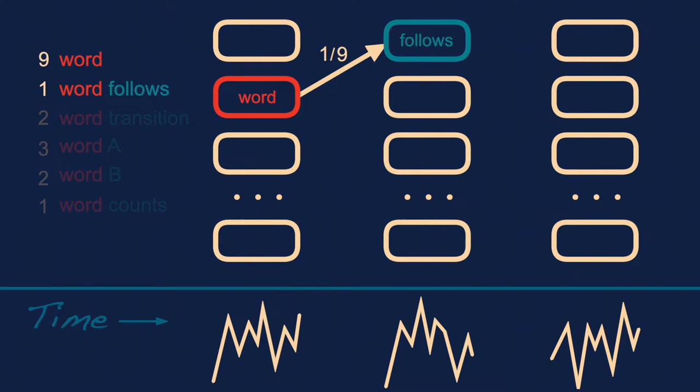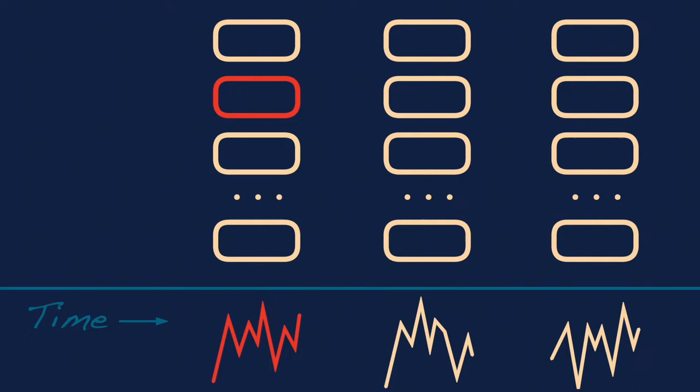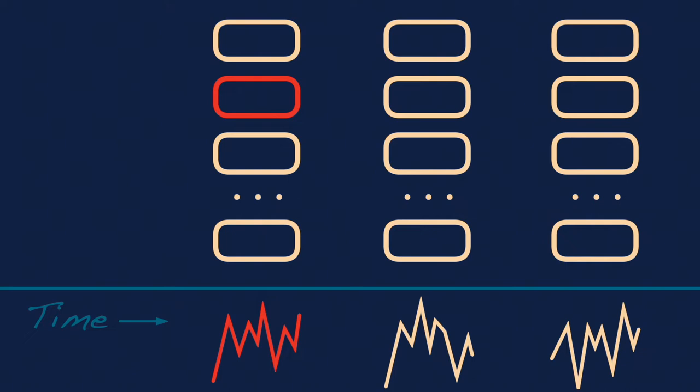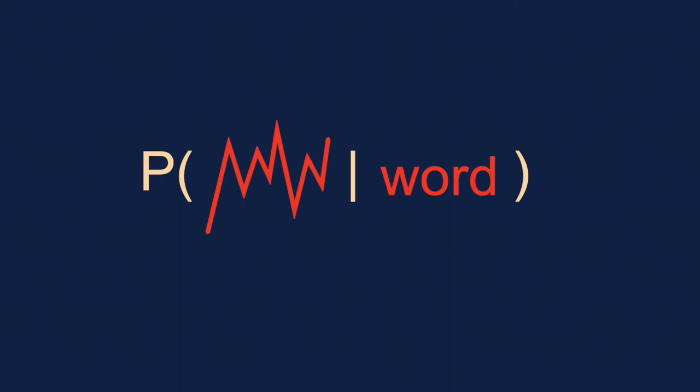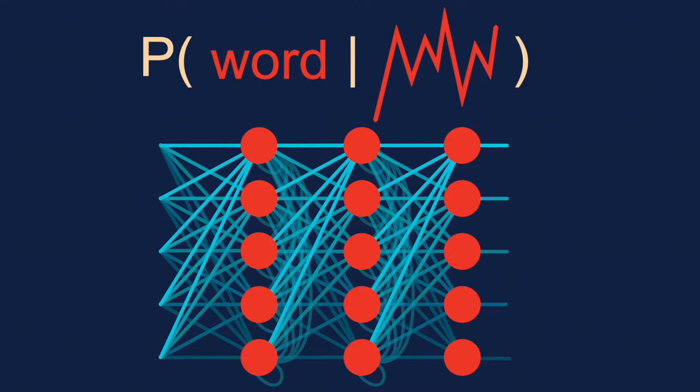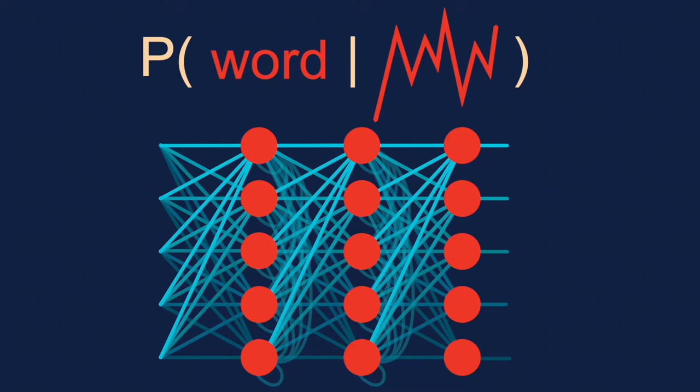It's a bit trickier to estimate the HMM's emission probabilities. What we need is an estimate of the probability that the HMM emits a particular brain signal when in the state corresponding to a particular word. While neither team has probability estimates of a brain signal given a word, they do have estimates of the probability of a word given a brain signal. As we saw in Part 1, both teams built artificial neural networks specifically designed to calculate the probability of a word or character given a brain signal.